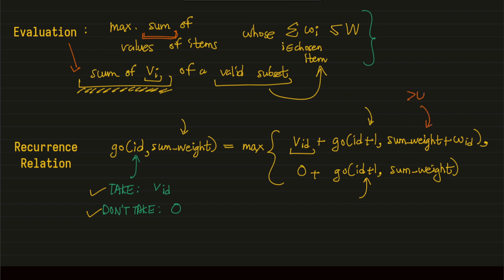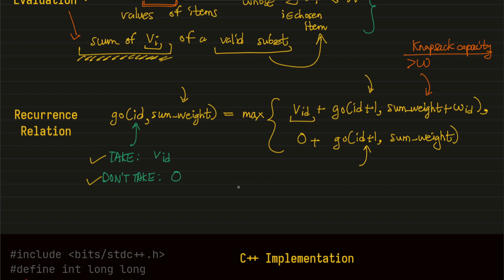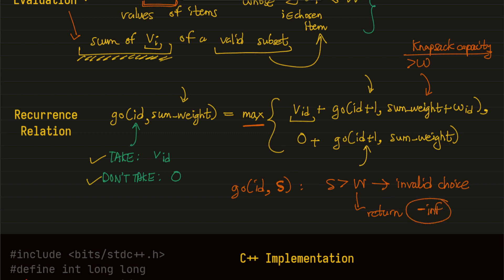There is one base condition that needs to be handled: the sum of weights could exceed W, which is the knapsack capacity. We need to handle that explicitly — whenever the sum of weights s is greater than W, that means we have an invalid choice of items. We must return minus infinity from this state so that the entire summation boils down to minus infinity and that choice is not considered in the answer. That's the entire recurrence relation.